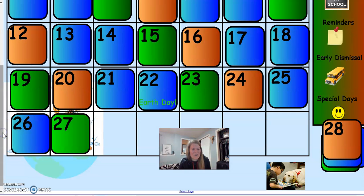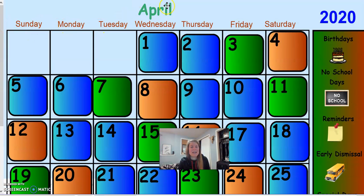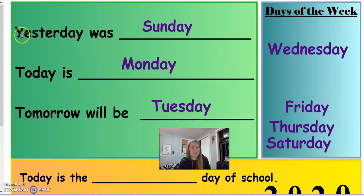So today, like I said, is our last week. It's hard to believe — today is Monday, April 27, 2020. So if today is Monday, that means yesterday was Sunday and tomorrow will be Tuesday.